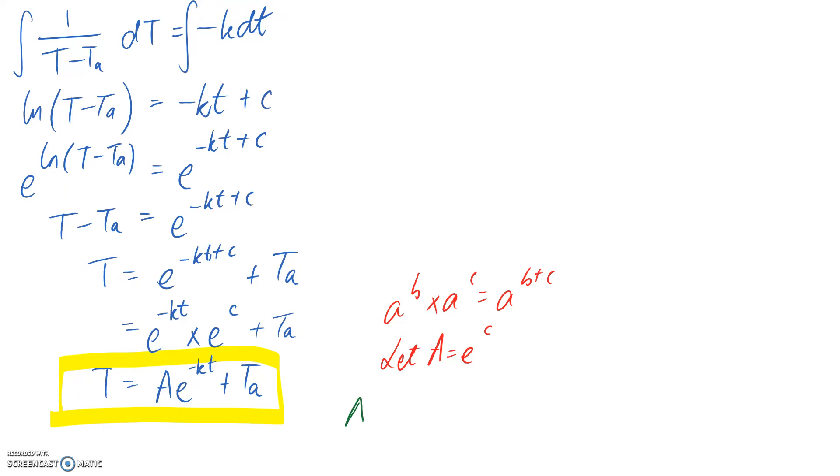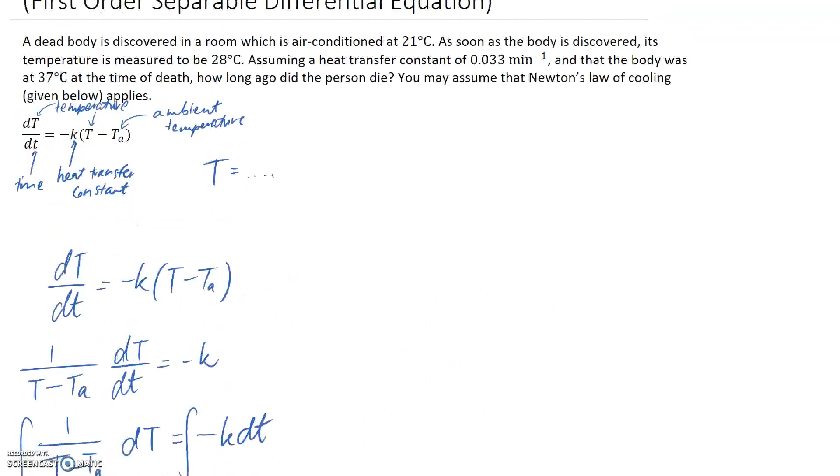So this here becomes the general solution to my differential equation. I've got quite a few constants in this: my constants are the A, the k up here which is the heat transfer constant, and TA which is the ambient temperature. So hopefully I've got three pieces of information up in the question to be able to solve for those three constants.